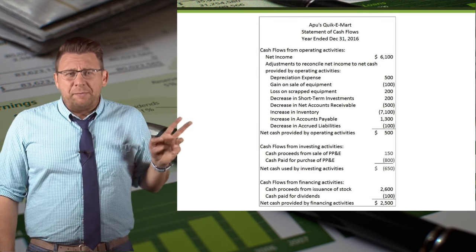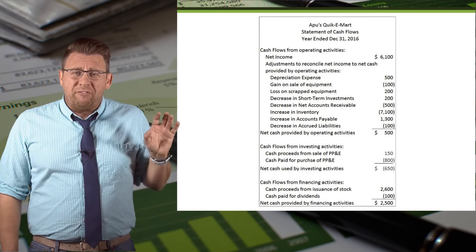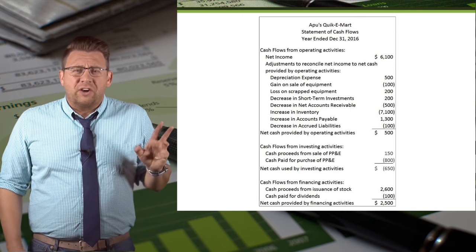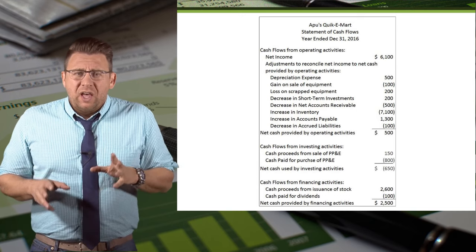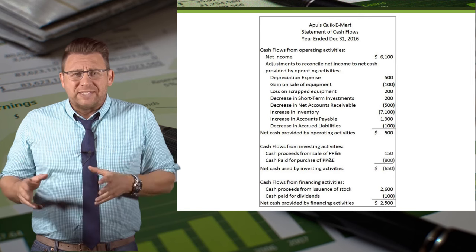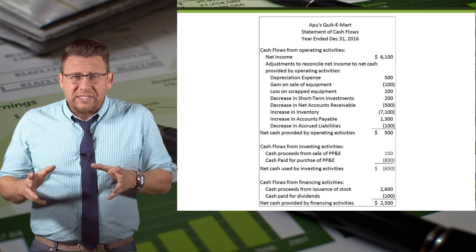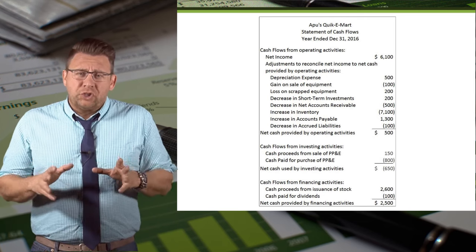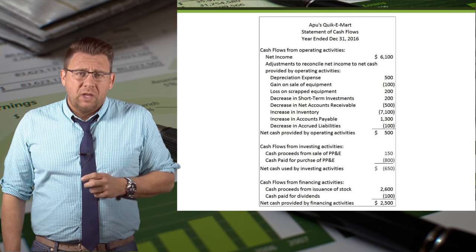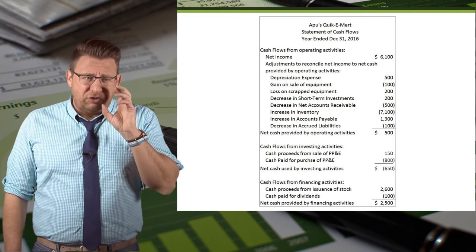Here's what the statement of cash flows looks like after completing the operating, investing, and financing activities sections. You can see that we have positive net cash flow from financing activities of $2,500. Investors and creditors don't really have strong expectations about this section, other than that growth companies tend to have positive cash flows while more mature businesses generally have negative cash flows from financing activities, as they pay out cash in dividends or reduce liabilities. Please watch the video on completing the statement of cash flows indirect method to see how all of this information is brought together.